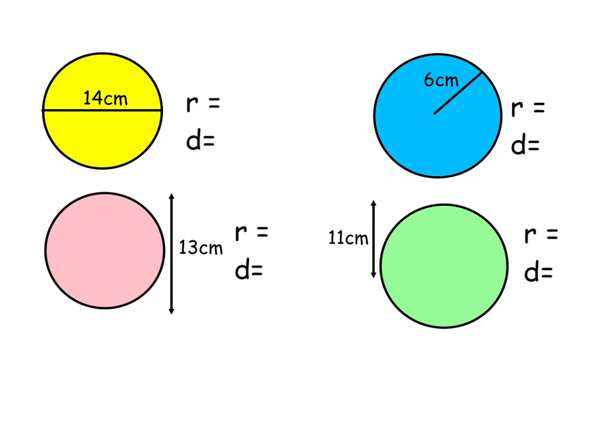So the first one, this yellow circle, we have to decide, is that 14 the radius or the diameter? It's the long length that goes from one side to the other right through the middle. So that is my diameter. So my diameter is 14. So my radius is that line there, which I've done in blue, which is half of 14 and half of 14 is 7.